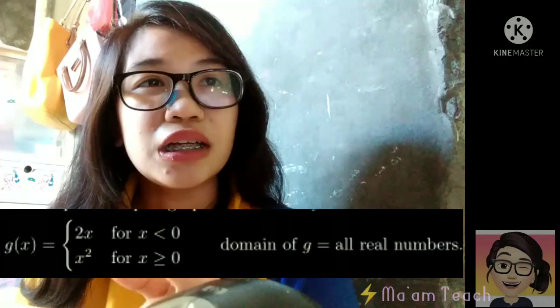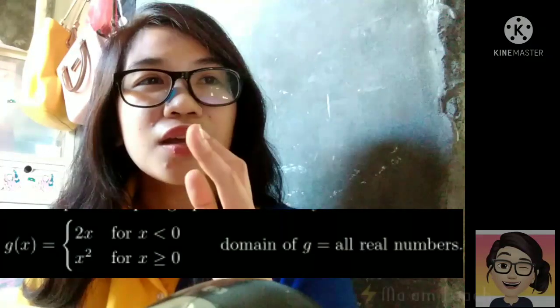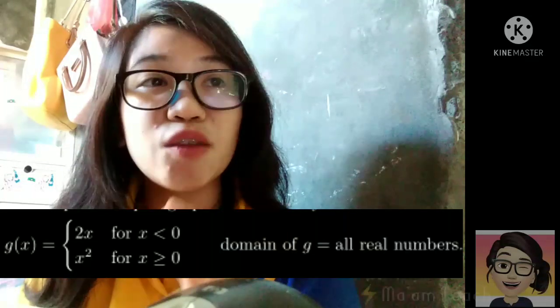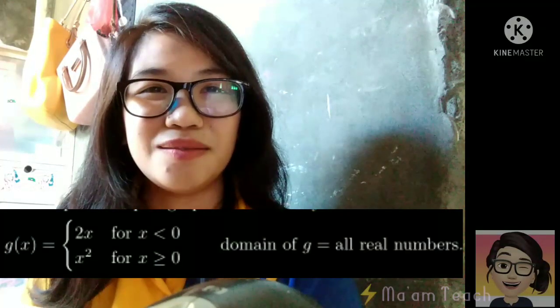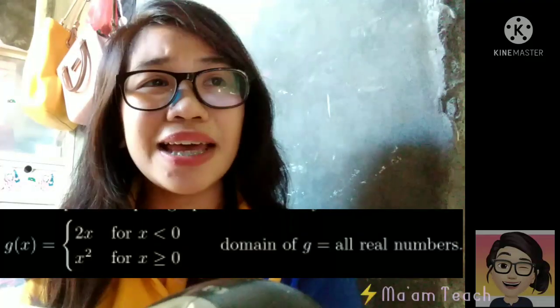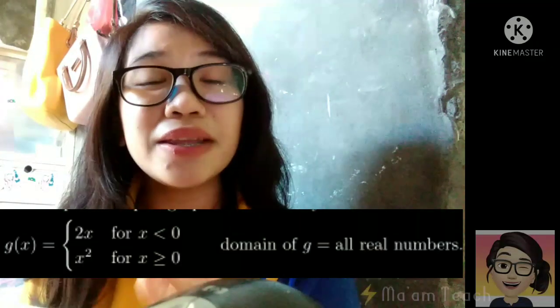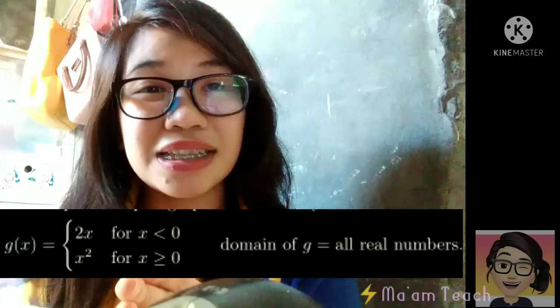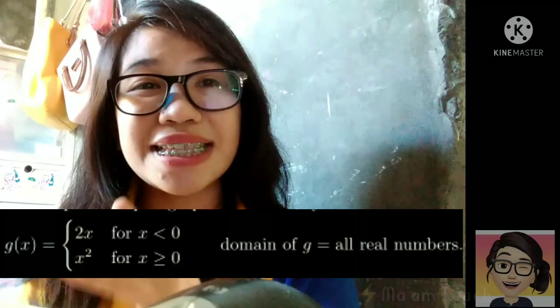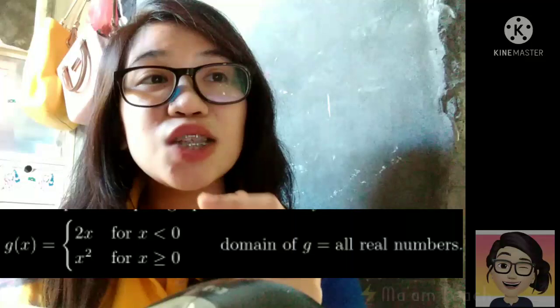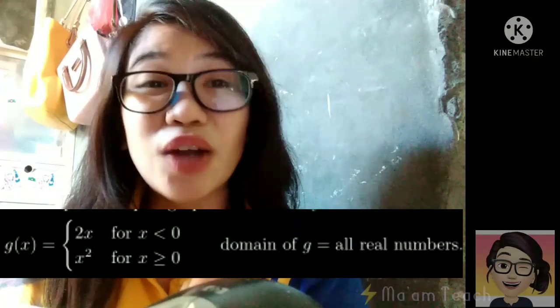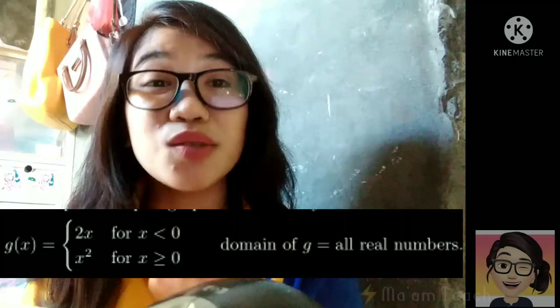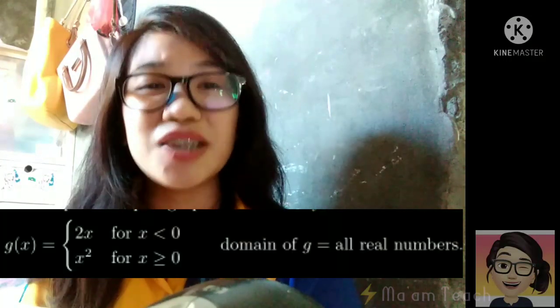Sabi dito, g of x is equal to 2x for x is less than 0. Ano ibig sabihin ito? Ibig sabihin na dapat yung gagamitin mo lang daw na value of x in this equation which is 2x is yung mga numbers which are less than 0. So, ano yung mga numbers na yun? Those are negative numbers.